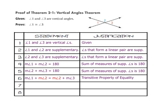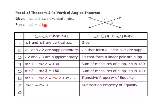In step 7, the measure of angle 1 equals the measure of angle 3 because of the subtraction property of equality — we subtract the measure of angle 2 from each side. In step 8, we can prove that angle 1 is congruent to angle 3 because angles with the same measure are always congruent.